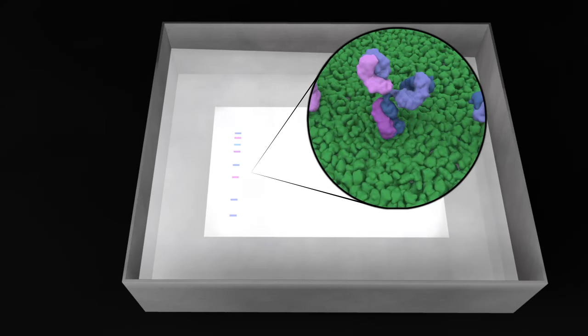In the next step, the membrane is probed with an antibody that recognizes the protein of interest, specific residues, or chemical modifications. The membranes used for Western blotting have a high affinity for proteins, including antibodies.